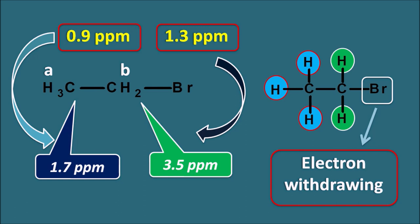By observing a chemical shift value in the NMR spectra we can assess the chemical environment of that proton. If a methyl proton is at 0.9 ppm it is isolated with no electron-withdrawing group nearby, but if shifted to higher values it is attached to an electron-withdrawing group. To do this we need to know the approximate chemical shift values of different proton types, which we can organize into six groups ranging from 0 to 12 ppm.